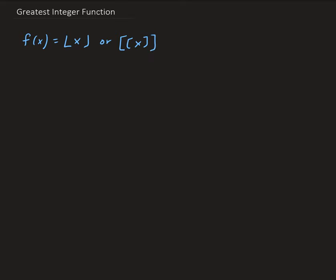What the greatest integer function says is that the output is the greatest integer less than or equal to x.